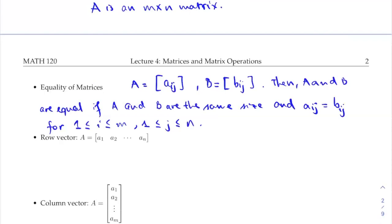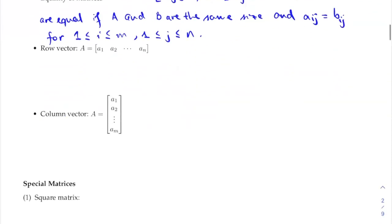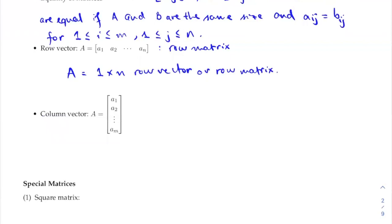The next definition is the row vector. A row vector has one row and multiple columns — this is defined as a row matrix. So A is a 1-by-n row vector or row matrix. This is another way to say that not only can you use this as a row matrix, but there's another name for it: a vector. The next definition is a column vector or column matrix.